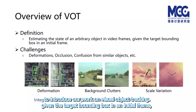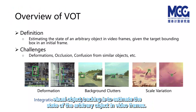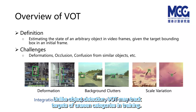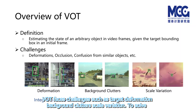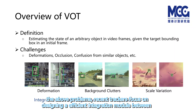Given the target bounding box in an initial frame, visual object tracking is to estimate the state of an arbitrary object in video frames. Unlike object detection, VOT may track targets of unseen categories in training. VOT faces challenges such as target deformation, background clutter, and scale variation.